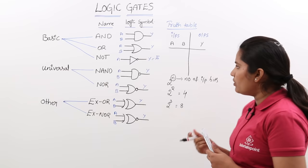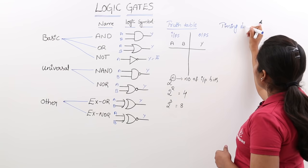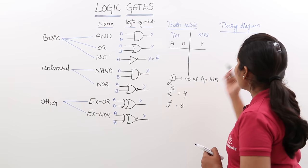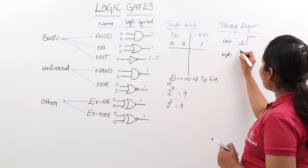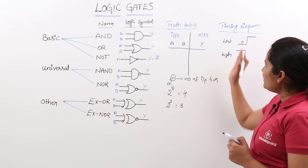Now we will move to timing diagrams, which are also very important. Timing diagrams are the diagrammatic representation of input and output. Here, a low level will be represented at the bottom and a high level will be represented at the top. High level is shown in high pitch and low level is taken at the down position.